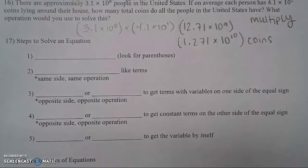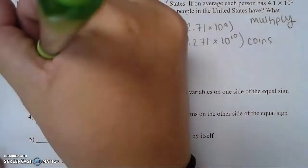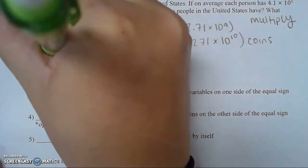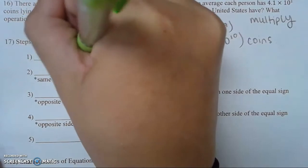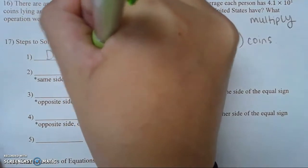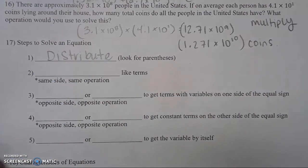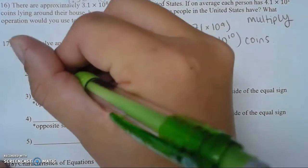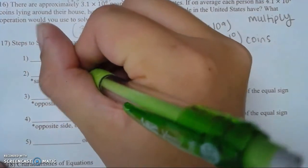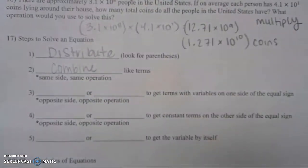We are on number 17 now — steps to solve an equation. The first step is to distribute if you can, so whenever you see parentheses you need to think of the distributive property. Next you will need to combine your like terms, and remember if they're on the same side you will be using the same operation.